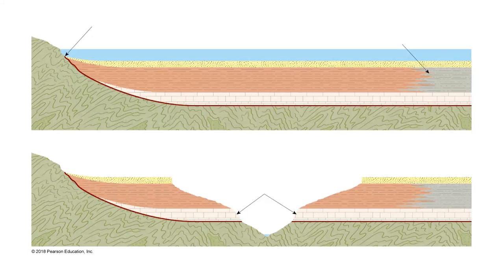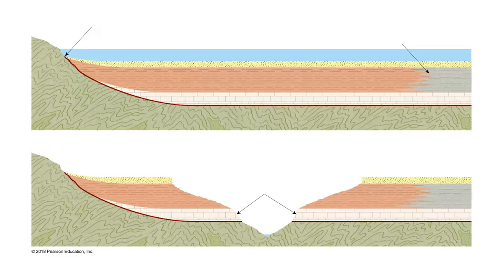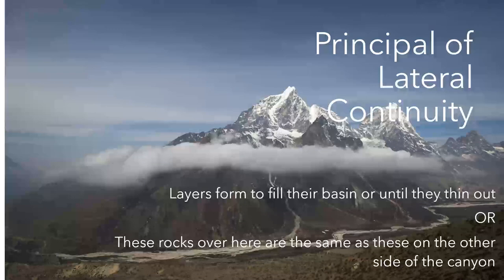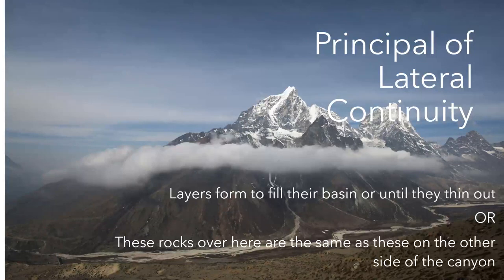Now, if that then becomes rock and gets lifted up above the basin, a gulch, or a river valley, or a canyon might form. But if it does, that new feature is not an original boundary. What this means is that the rocks on one side of this new feature will be the same as the ones on the other side. So that's the principle of lateral continuity, which concludes this video on the first three principles of geology, or the principles of stratigraphy.